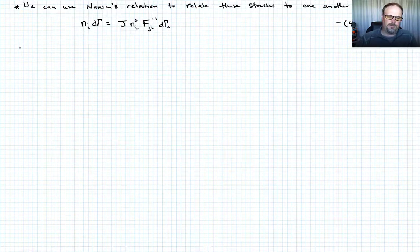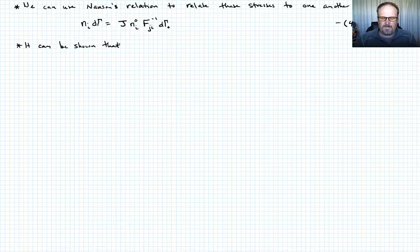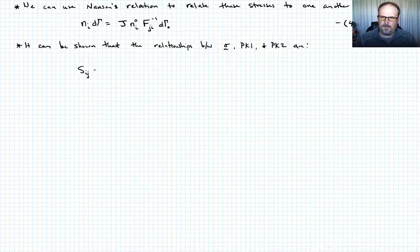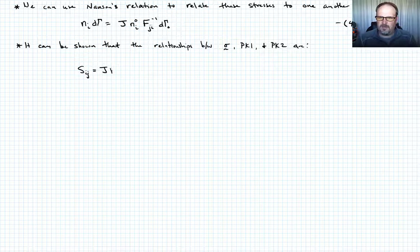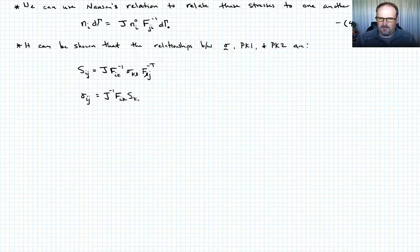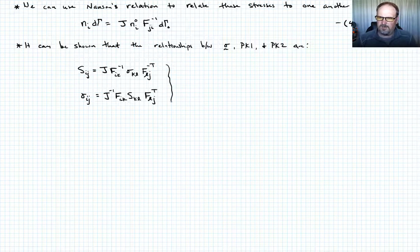So I'm just going to give you the relationships and just say it can be shown that the relationships between sigma, pK1, and pK2 are as follows. We could say that S_ij is going to be equal to J times F_ik inverse times sigma_KL times F_LJ inverse transpose. And we could go back the other way and write that sigma_IJ, if we knew S_ij, it's going to be equal to J inverse times F_ik times S_KL times F_LJ transpose. We'll just collectively call these equations five.